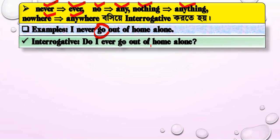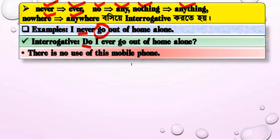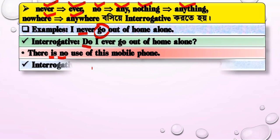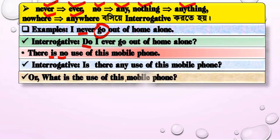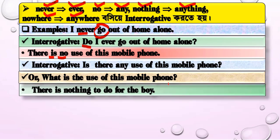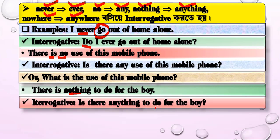The sentence 'I never go out of home alone' becomes 'Do I ever go out of home alone?' Also, 'There is no use of this mobile phone' — here 'no' changes to 'any' — becomes 'Is there any use of this mobile phone?' And 'There is nothing to do for the boy' uses the same rule.